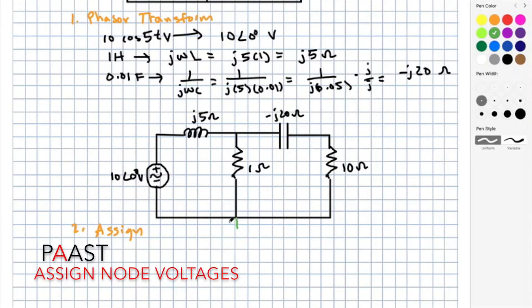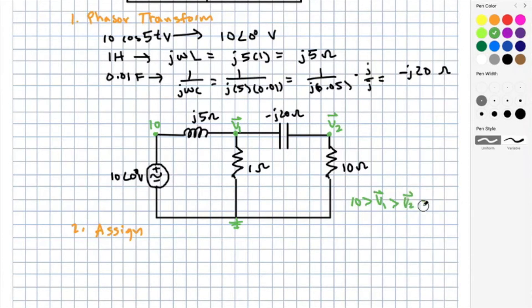Now let's move to step two, assign. The bottom is set to ground. The left-hand node is clearly 10 volts, and the other nodes are v1 and v2. Let's use our typical assumption that 10 is greater than v1 is greater than v2 is greater than zero, so we can direct our currents as we see here.